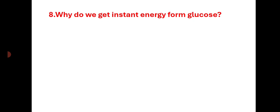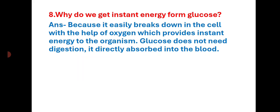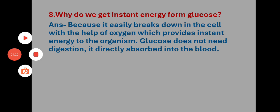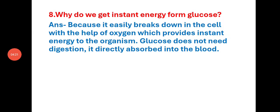Why do we get instant energy from glucose? Because glucose easily breaks down in the cell with the help of oxygen, which provides instant energy to the organism. Glucose does not need digestion — it is directly absorbed into the blood.